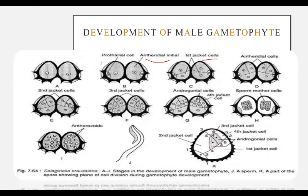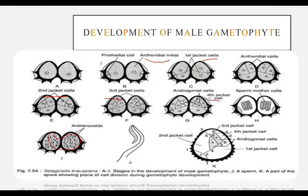An oblique wall division occurs and we get the first jacket cell. Then a periclinal division occurs giving two more jacket cells, then a third and fourth jacket cell from further division. Finally, the antherozoids formed are biflagellated, spiral, and uninucleate. They are released by rupture of the exine and intine and are free to swim, reaching the female gametophyte by swimming in water.